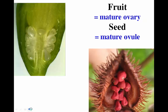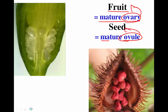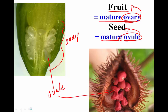Now let's turn to the fruit. The fruit is simply the mature ovary. The ovary turns into the fruit and the ovule turns into the seed. Inside the ovary are ovules; those ovules become seeds, and that ovary becomes the fruit at maturity, with an embryo developing within the ovule after fertilization.